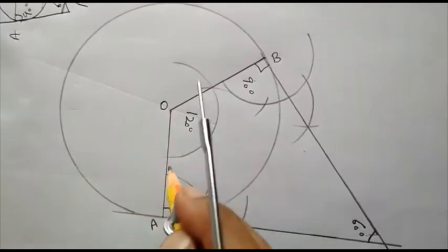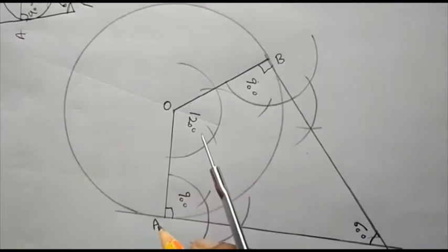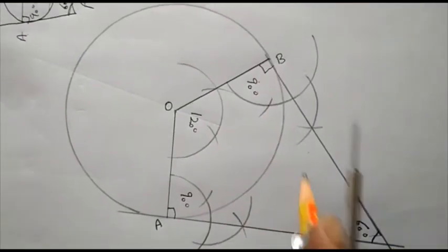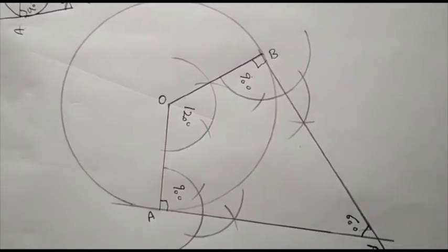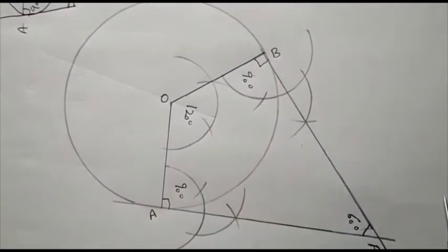So at O, I have drawn an angle of 120. Now at A and B, we will draw tangents by making an angle of 90. Where these tangents intersect on extending, that is the external point P and angle APB will be 60.